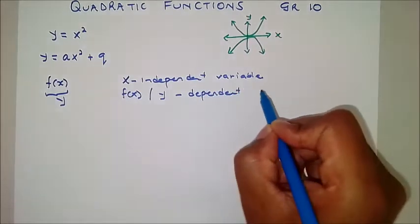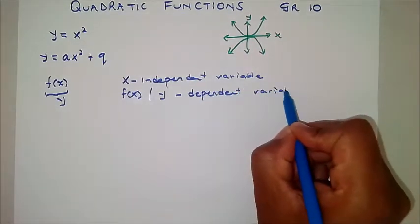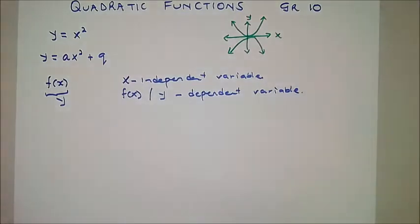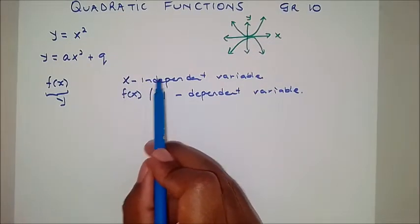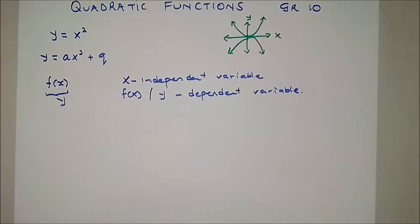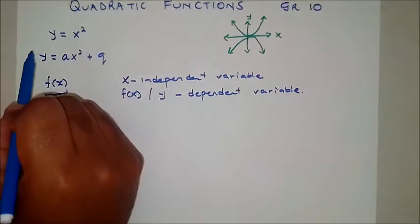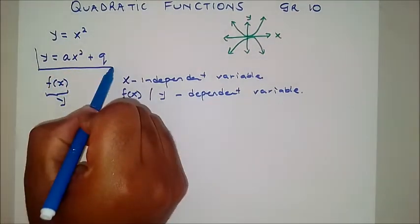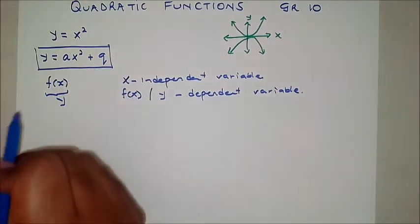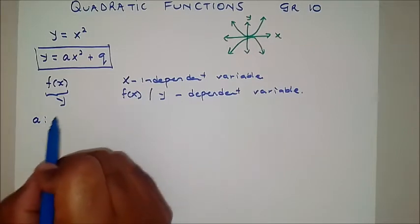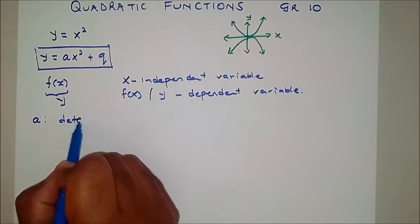Sometimes you might see h(x) or g(x) — don't let your heart fail if you see such things, because they enable you to appreciate that x is the independent variable and y is the dependent variable. So in the standard form of this function, it's y = ax² + q. Let's look at what 'a' determines.